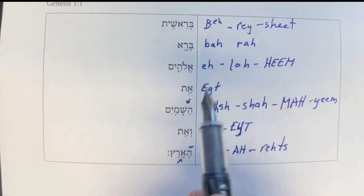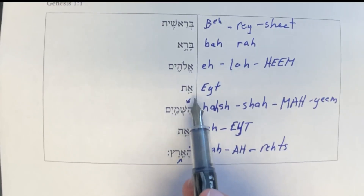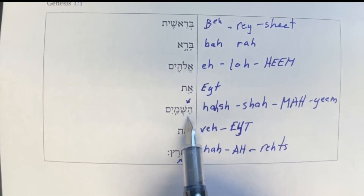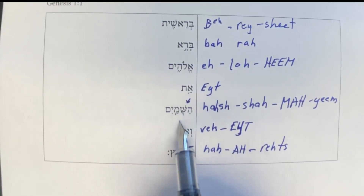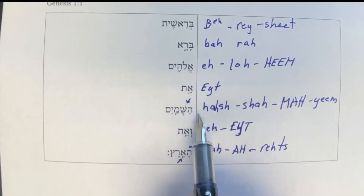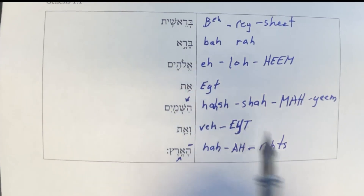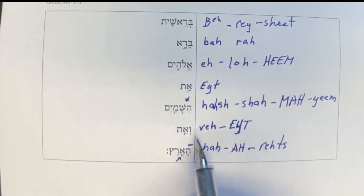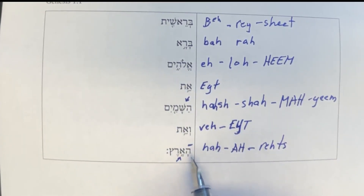So it's: 'Bereshit' — 'Barah' — 'Elohim' — 'Et' — 'Ha-Shamayim' (double letter there, 'Ha-Shamayim') — 'Va-Et' — 'Ha-ah-retz.'